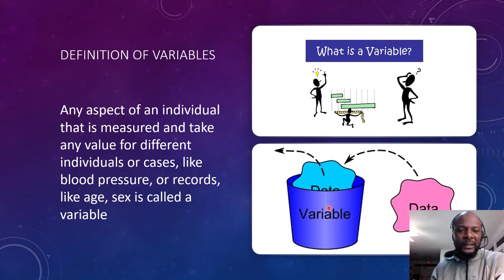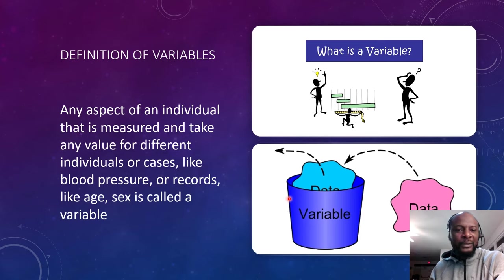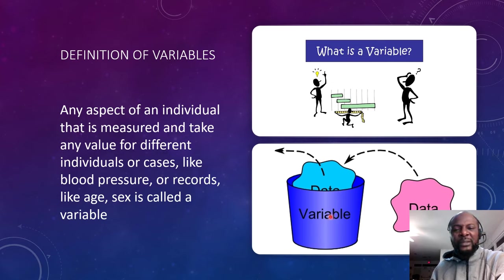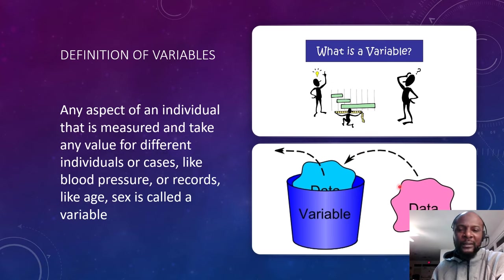To put this in better perspective, let's give an example like sex. The data you are actually collecting from the individual is not the sex itself but the particular attributes of that sex. Imagine sex is the container, but what you are collecting and putting into the container is whether the person is male or female — that's the data element. Another example is tribe. Tribe is the variable, but the data elements put into that variable container are whether the person is Hausa, Yoruba, Igbo, Kanuri, or whatever.